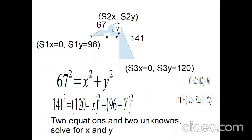For the first triangle, calling the x leg X and the y leg Y, the length of the linkage hasn't changed when the arm rotates to the right — it's still 67mm. So using the Pythagorean theorem: 67 squared equals X squared plus Y squared. For the second triangle, the arm length of 141mm hasn't changed, so the hypotenuse is 141 squared. The x dimension covers 120 minus X, and the y component is 96 plus Y, giving: 141 squared equals (120 minus X) squared plus (96 plus Y) squared.